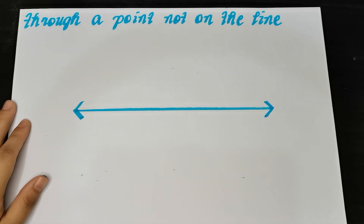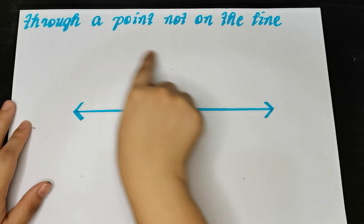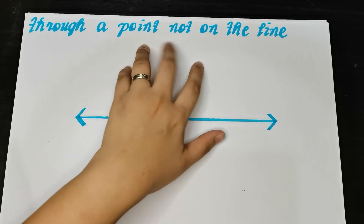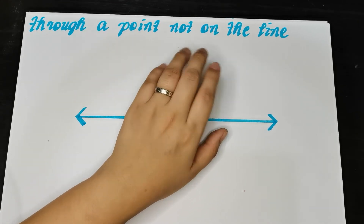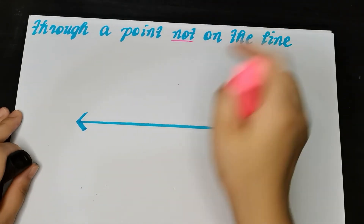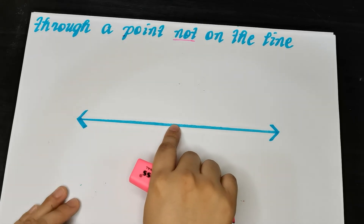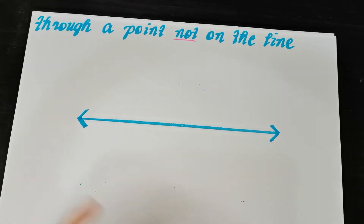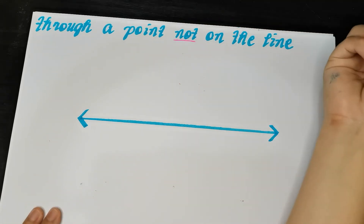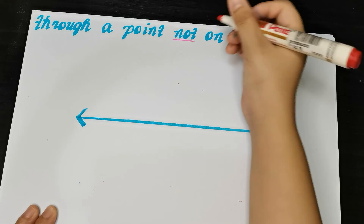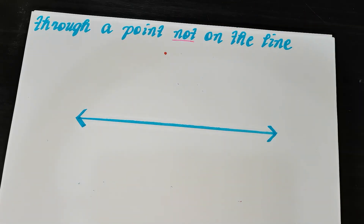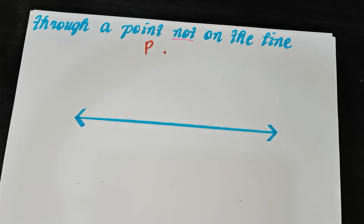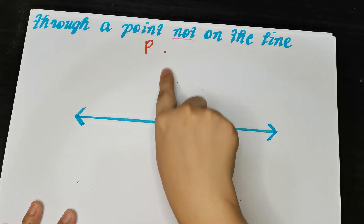So, we have line PR perpendicular — remember this symbol, it looks like an upside-down T — and it is already perpendicular to line AB. That is how to construct a line that is perpendicular to another line. Now let us proceed to the second part: constructing a perpendicular line through a point NOT on the line. The previous case had the point on the line; now the point is not on the line — it is found somewhere here. Let me draw a point somewhere here.